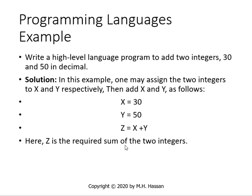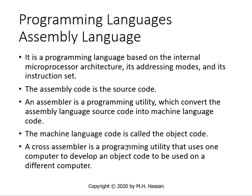As an example, we would like to write a high-level language program to add two integers, 30 and 50 in decimal. The solution: assign the two integers to x and y, then add x and y. So x equals 30, y equals 50, then z equals x plus y, which is 30 plus 50. The expected result is 80. Z is the required sum of the two integers.